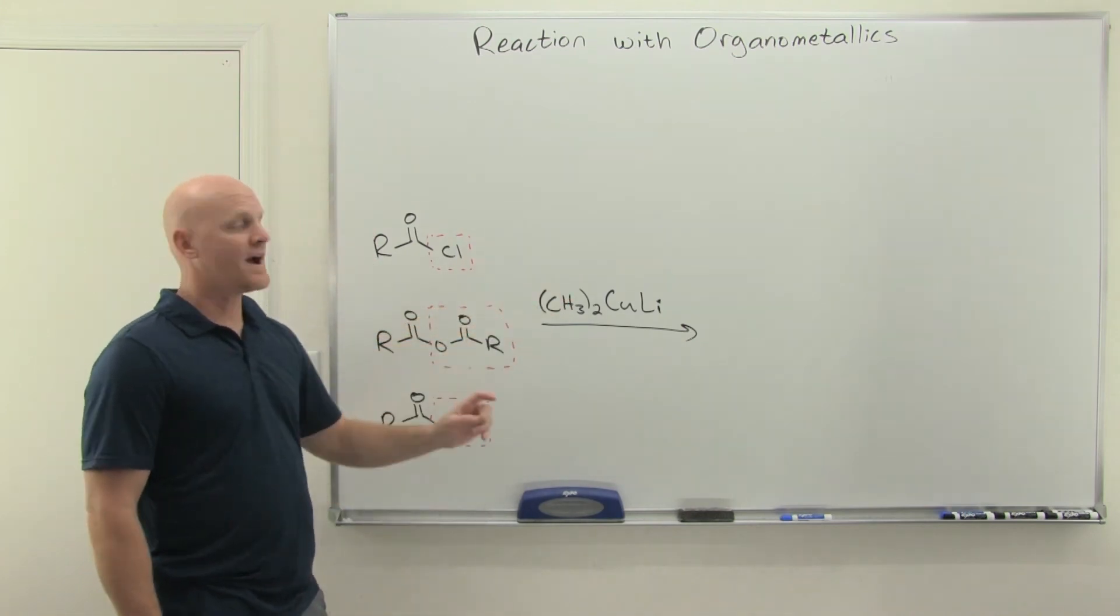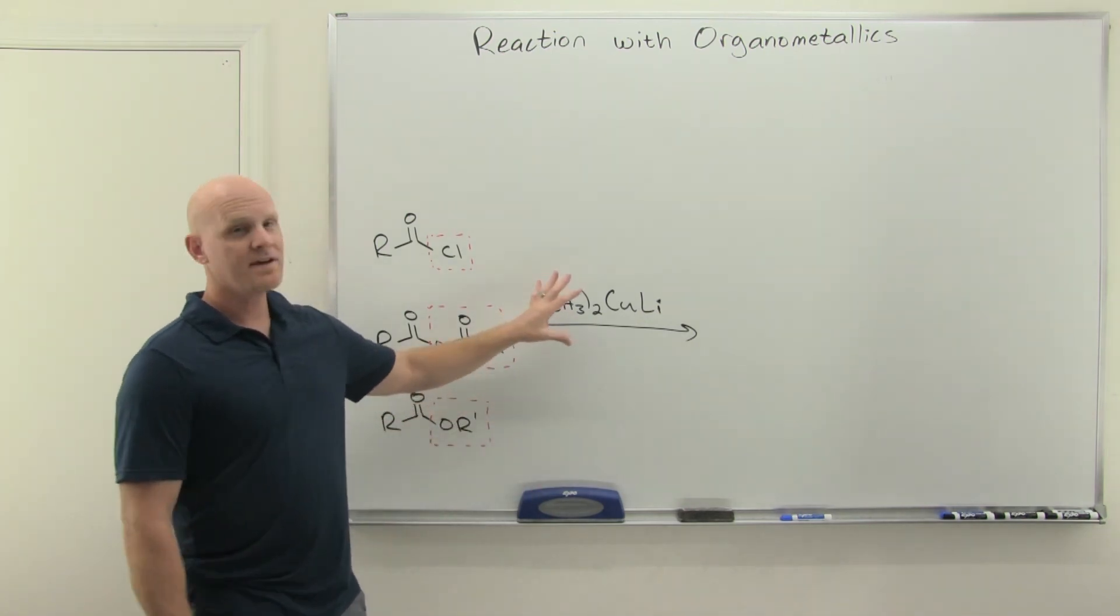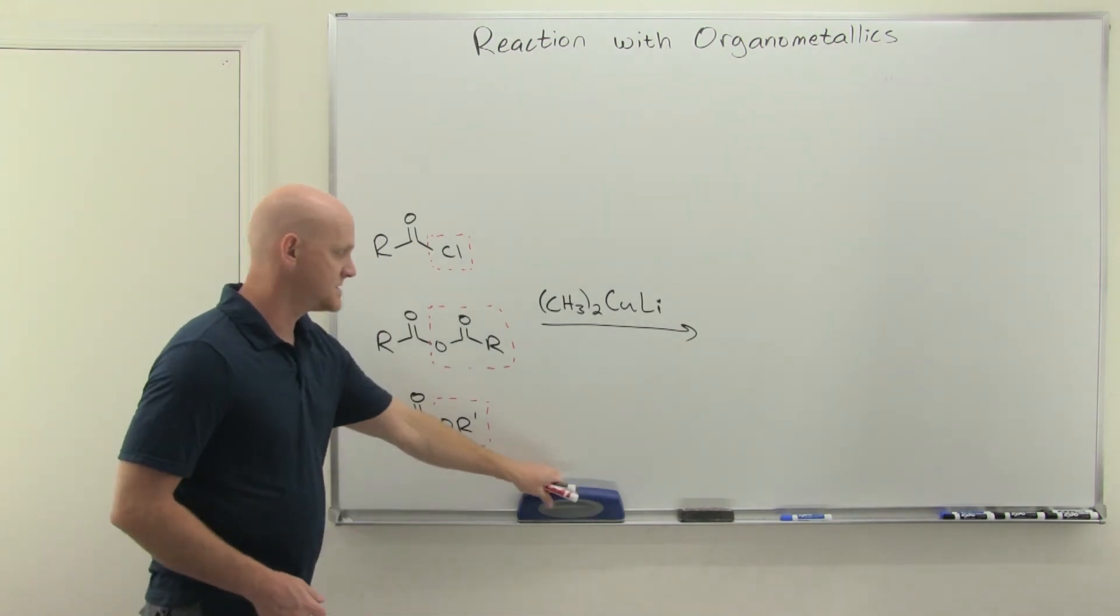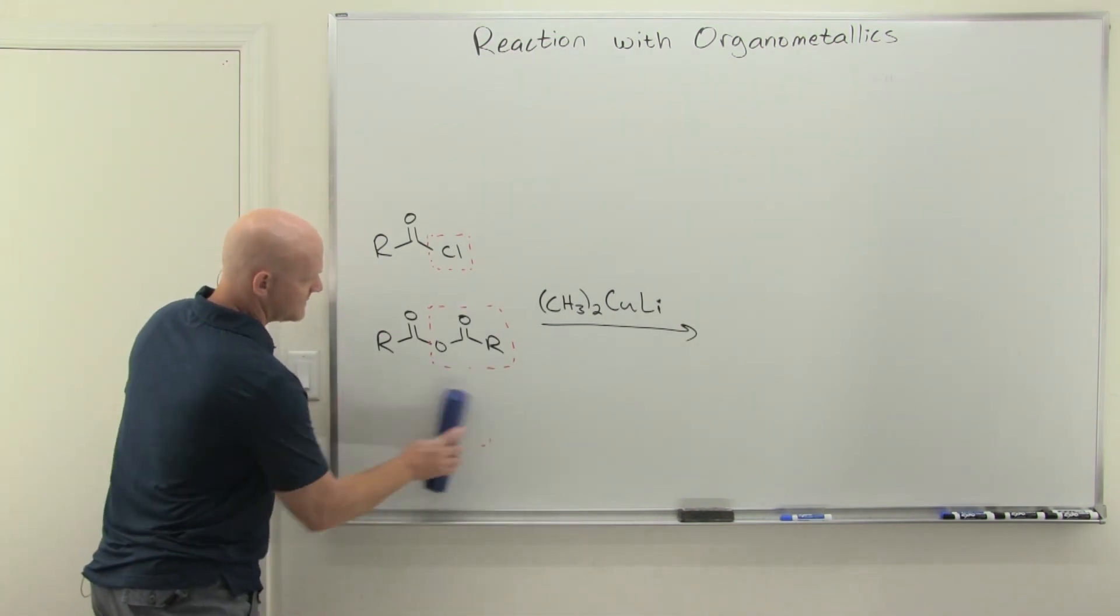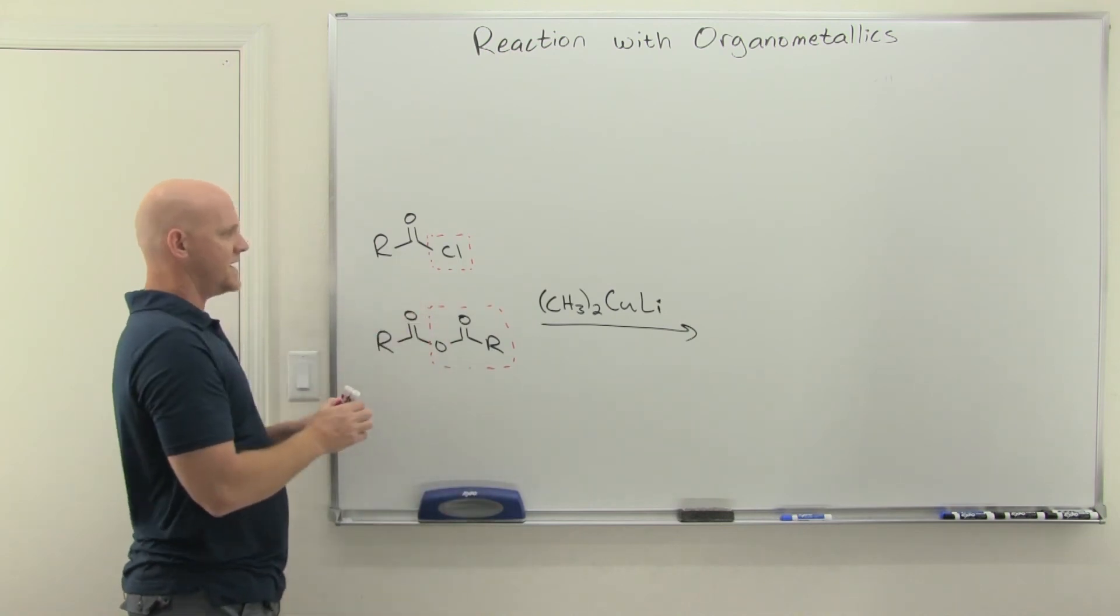Not quite as reactive. The carbon-copper bond is not as polar as the carbon-magnesium bond, and so not being as reactive, it turns out they're not going to react with esters. So we'll get esters off the list here, but they will still react with both the acid chloride and the anhydride.